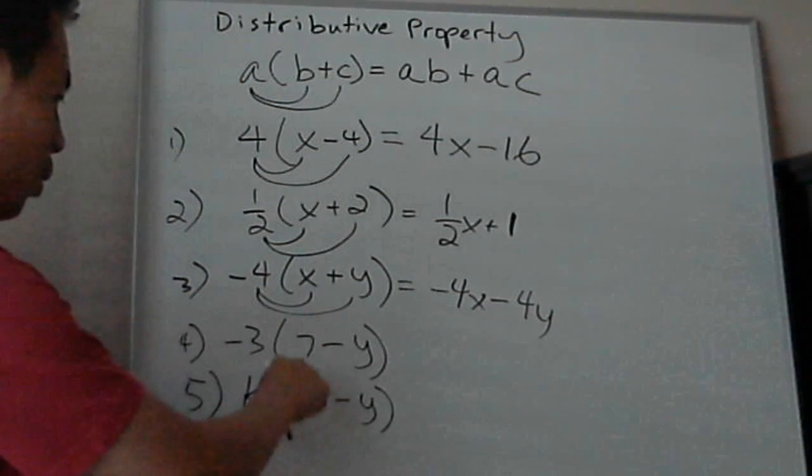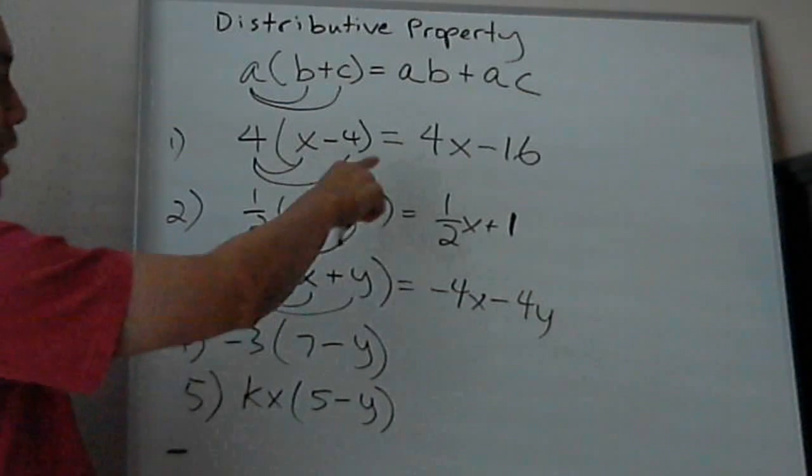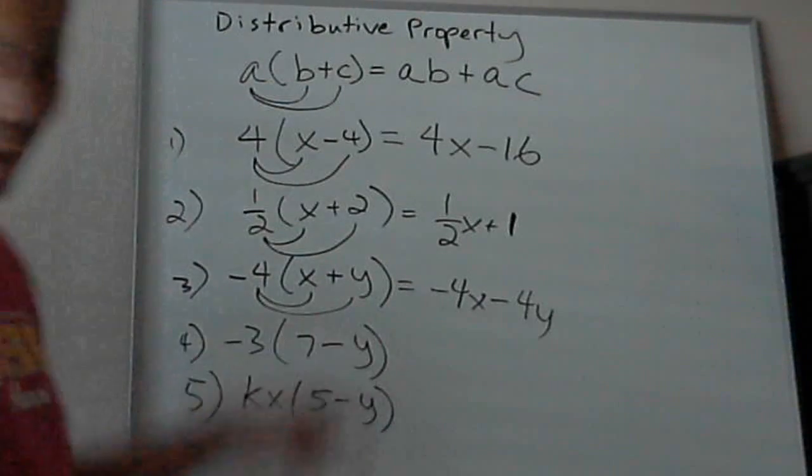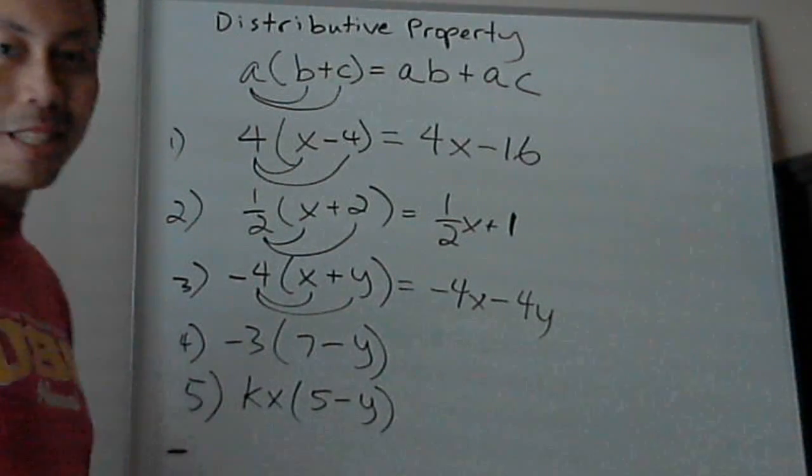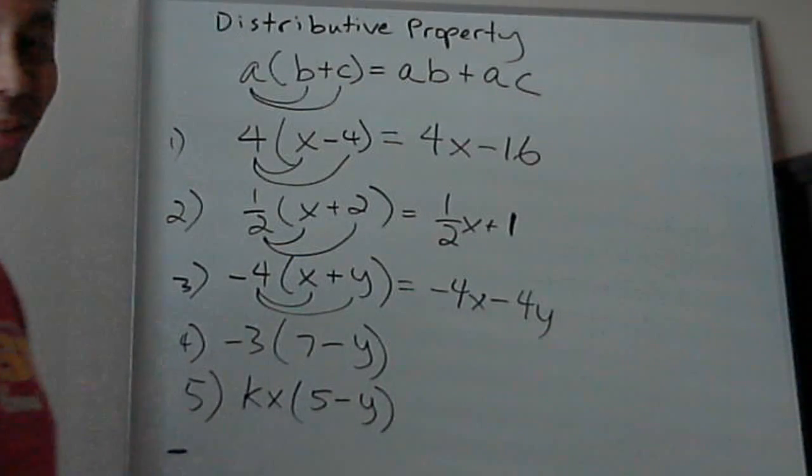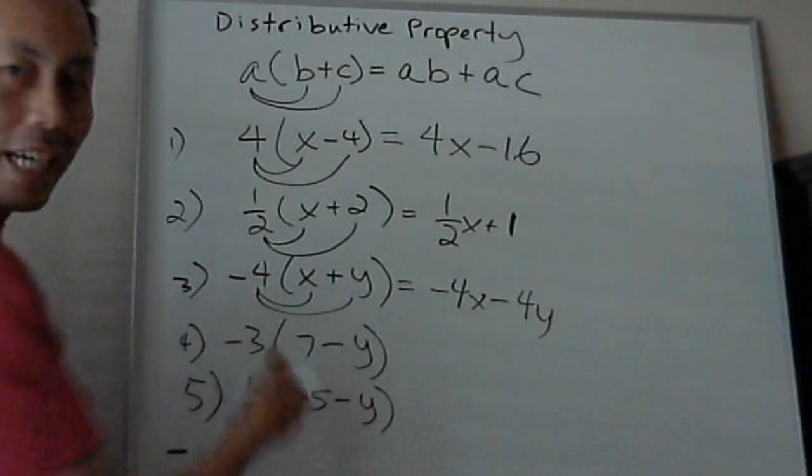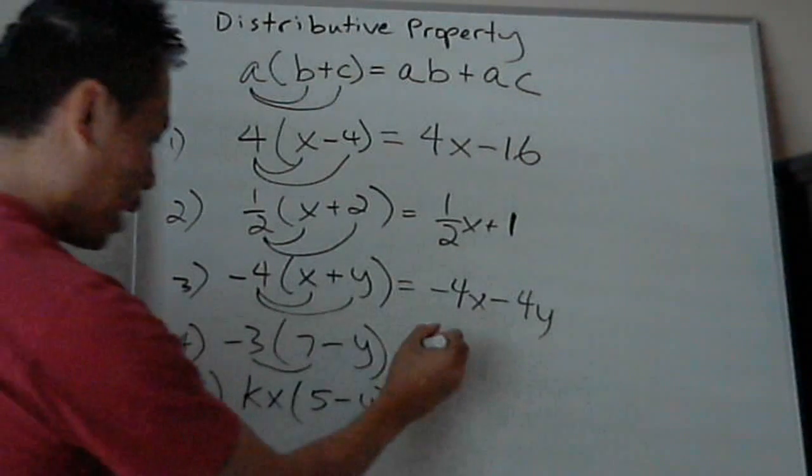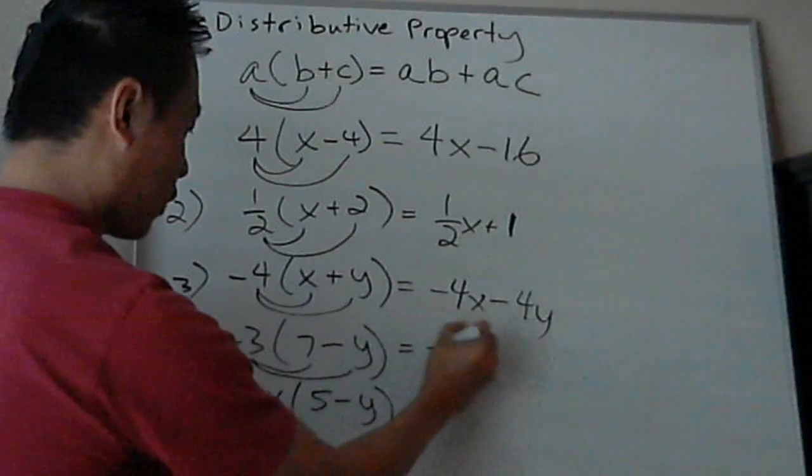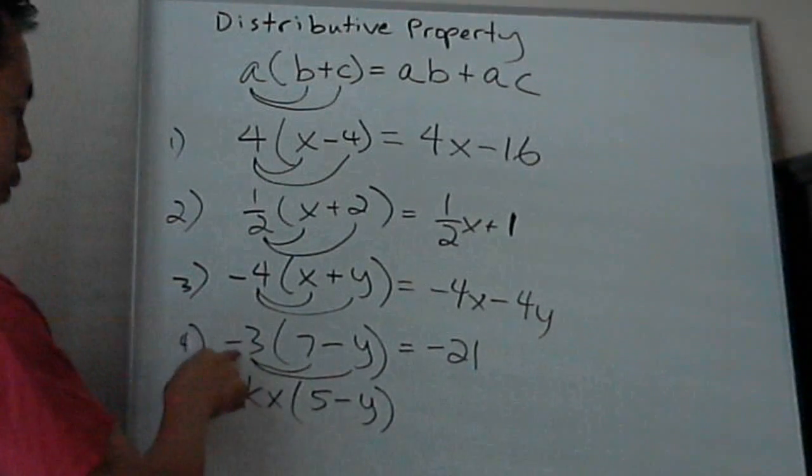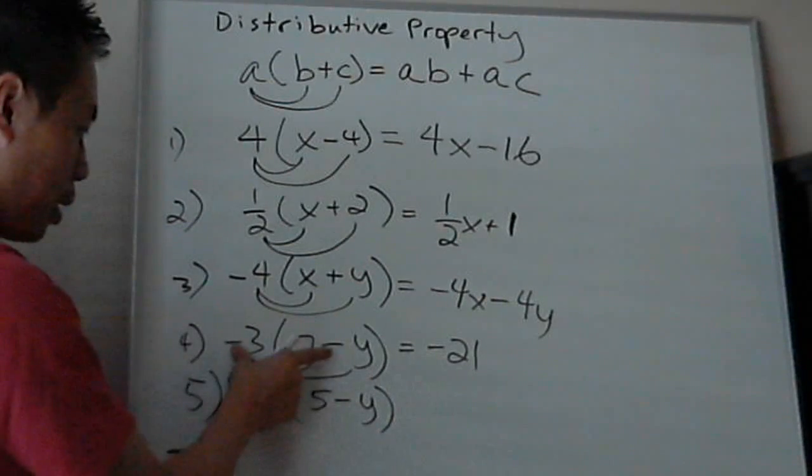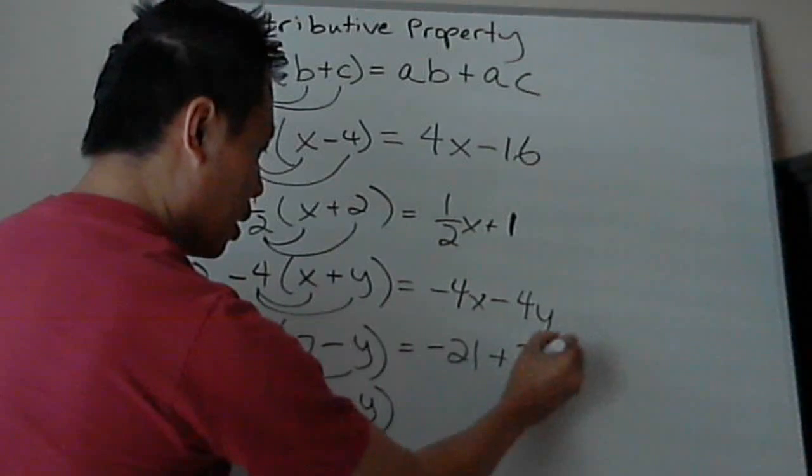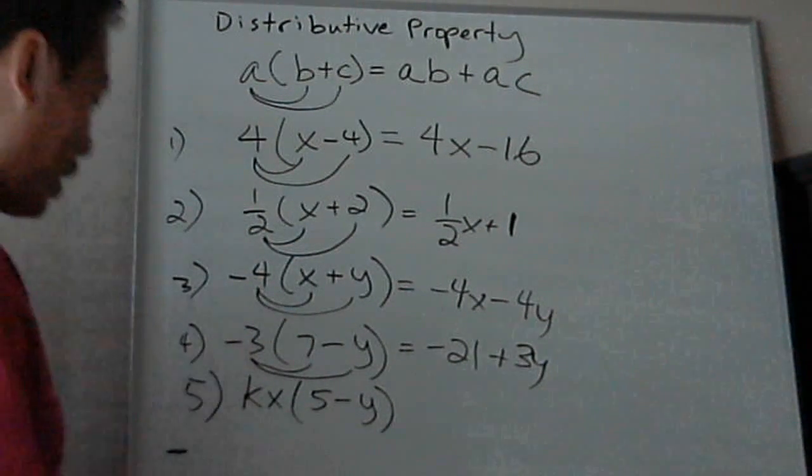We'll do another example with one number in different order. Some people see this and think the variable has to always be on the left side, but no, it can be anywhere. You have to get used to that. Negative 3 times 7 is negative 21. Negative 3 times negative y - negative times negative is positive - so 3 times y is positive 3y. That's it.